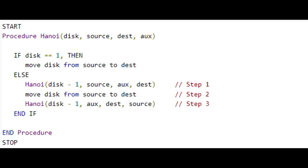Here is the procedure: if the number of discs equals one, just move the disc from source to destination. Otherwise, decrement the number of discs every time. We move source to auxiliary, then move one disc from source to destination, and then move auxiliary to destination. That's the last recursive call — the third variable stays at its position.